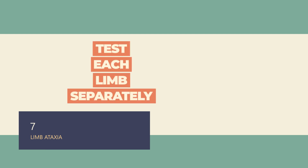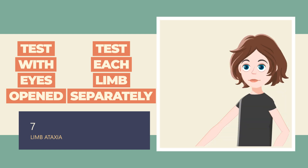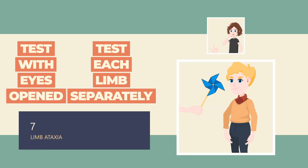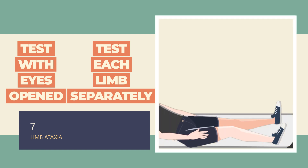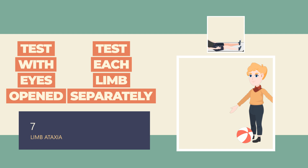Item 7, Limb Ataxia, is an assessment of limb coordination. Each limb is tested in turn with the eyes open; in case of visual defect, ensure testing is done in the intact visual field. Finger-nose-finger is tested by holding your index finger in front of the patient at arm's length and asking the patient to first touch his nose, then reach forward to touch your finger. Repeat enough times to definitely exclude ataxia. In children, this task can be substituted by reaching for a toy with the upper extremity. For the heel-shin test, the patient is helped into the starting position with knee flexed and heel set just below the kneecap. In children too young or uncooperative, leg ataxia can alternatively be tested by kicking a ball, kicking a toy, or kicking the examiner's hand.